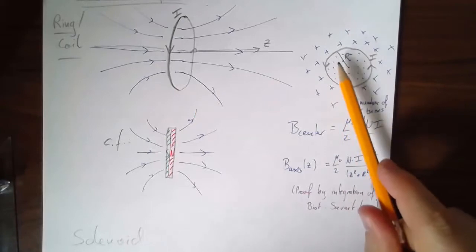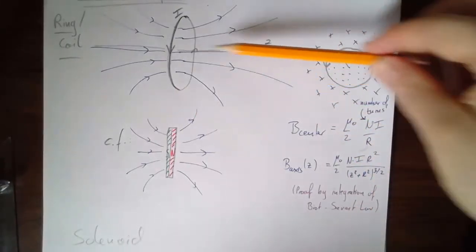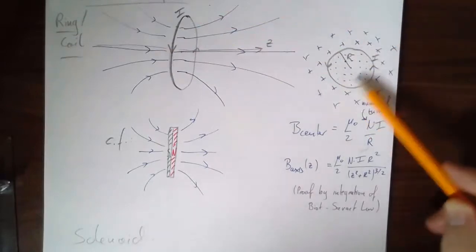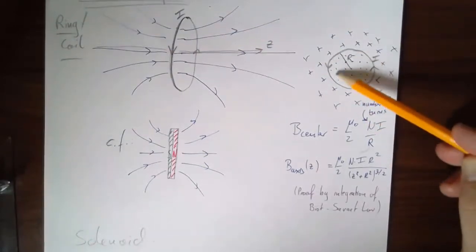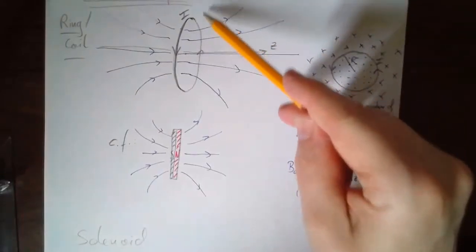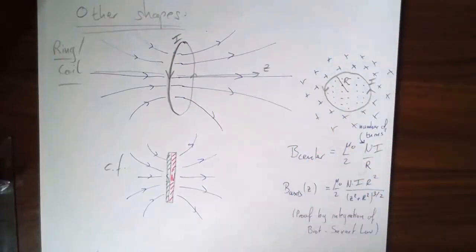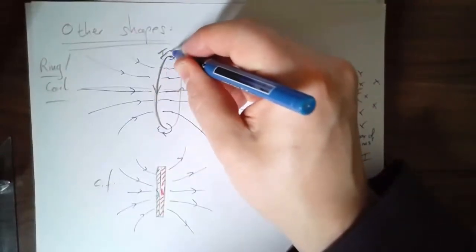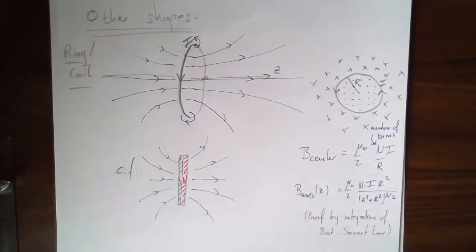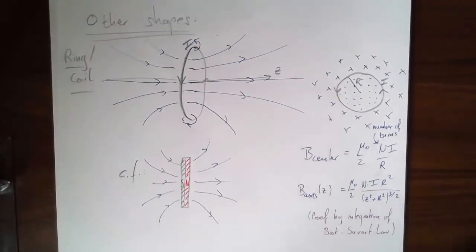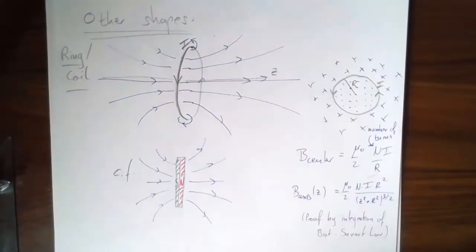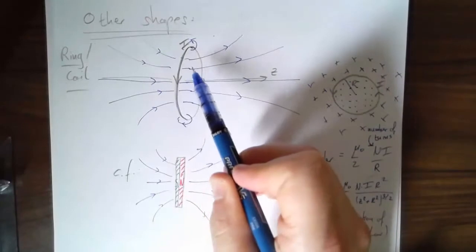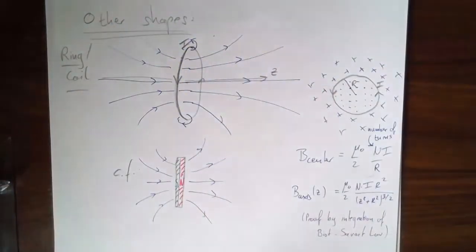The 2D version — looking at it from the side — the field is coming towards me in the middle and pointing away around it. It kind of curves around like this. You have to imagine the whole thing in 3D, so quite close to you it's a little field line that curves around like this. If you draw those field lines, it kind of looks a bit like a donut shape — they always go around the wire.